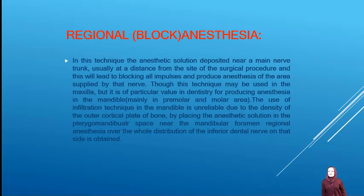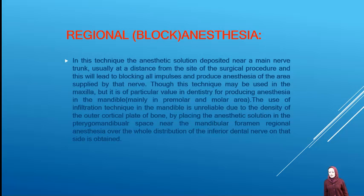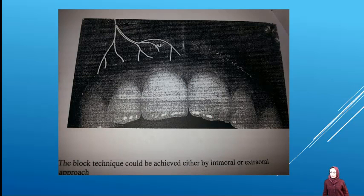Regional or block anesthesia: in this technique, the anesthetic solution is deposited near the main nerve trunk, usually at a distance from the site of the surgical procedure. This blocks all impulses and produces anesthesia of the area supplied by that nerve. Though this technique may be used in the maxilla, it is of particular value in dentistry for producing anesthesia in the mandible, mainly in the premolar and molar area. Infiltration technique in the mandible is unreliable due to the density of the outer cortical plate of bone; by placing the anesthetic solution in the pterygomandibular space near the mandibular foramen, anesthesia over the whole distribution of the inferior dental nerve on that side is obtained.